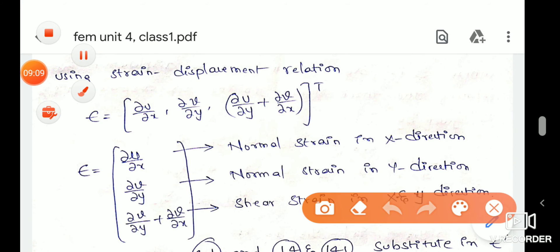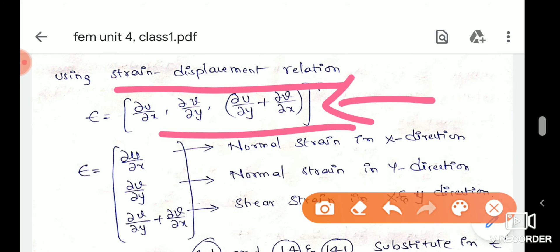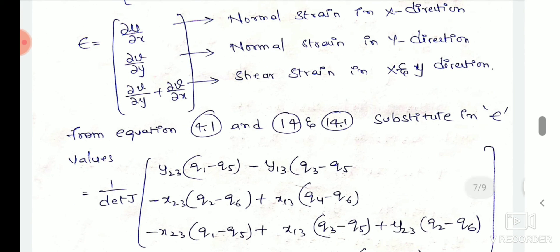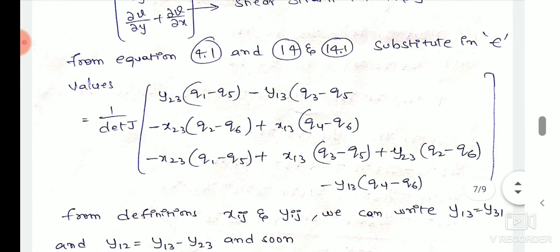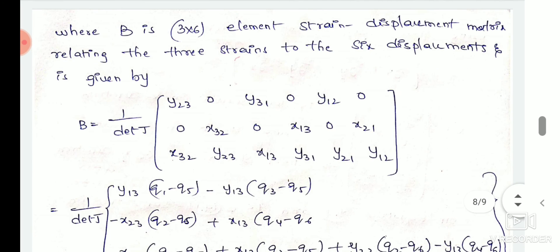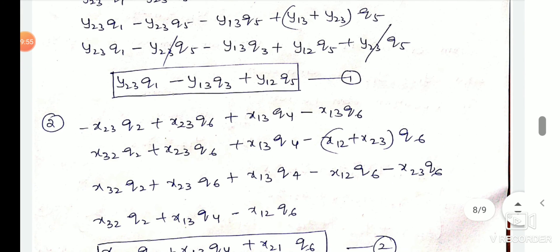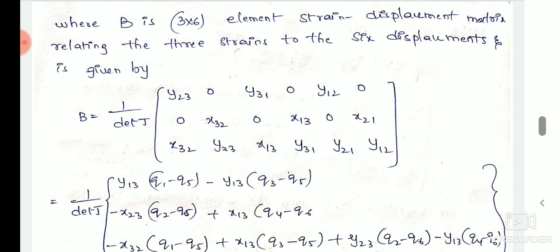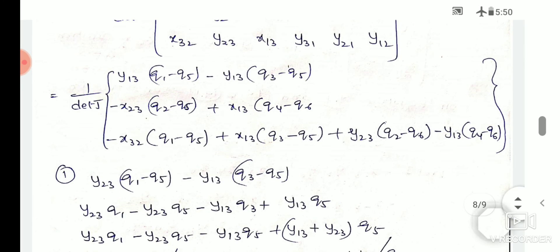Next, we will find the strain-displacement relationship. We will derive the strain-displacement relationship step by step, writing u and forming the equations with respect to x and solving. B is the strain-displacement matrix. It is very important to find the strain-displacement matrix.